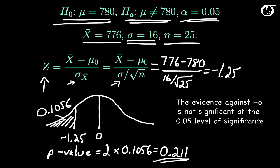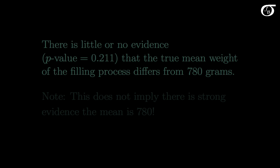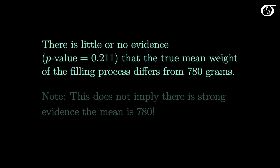Even if we did not have a given alpha level, we should still be able to come up with a reasonable conclusion based on the p-value. Here the p-value of 0.211 is not very small. And so we could say something like, with a p-value of 0.211, there is little or no evidence that the true mean weight of the filling process differs from 780 grams.